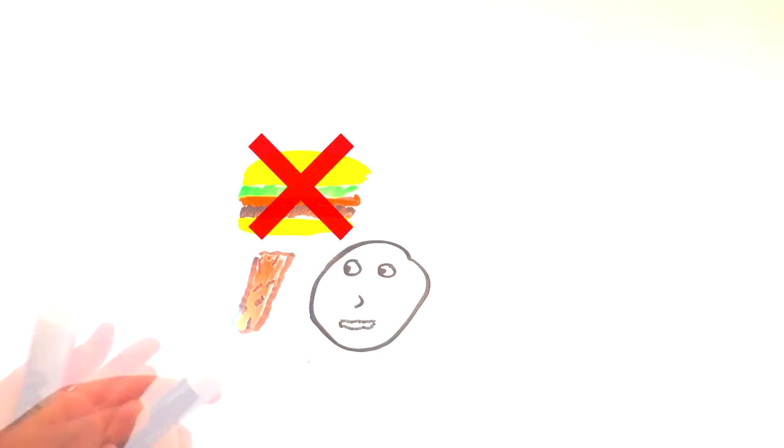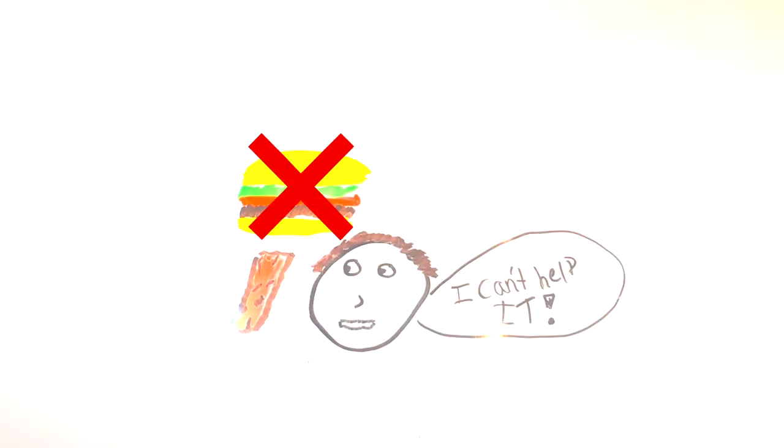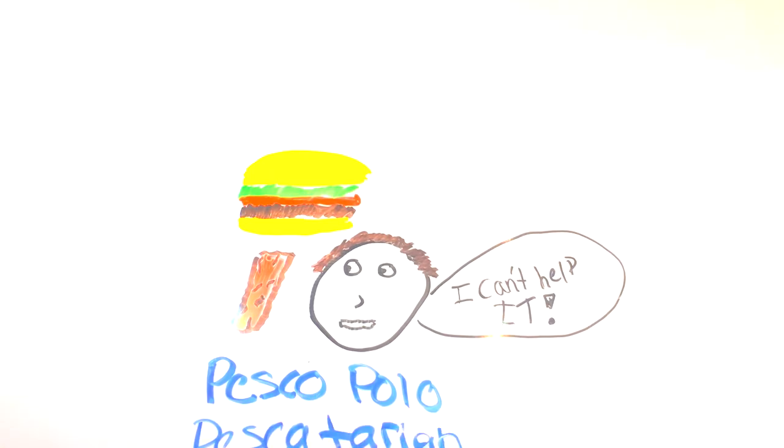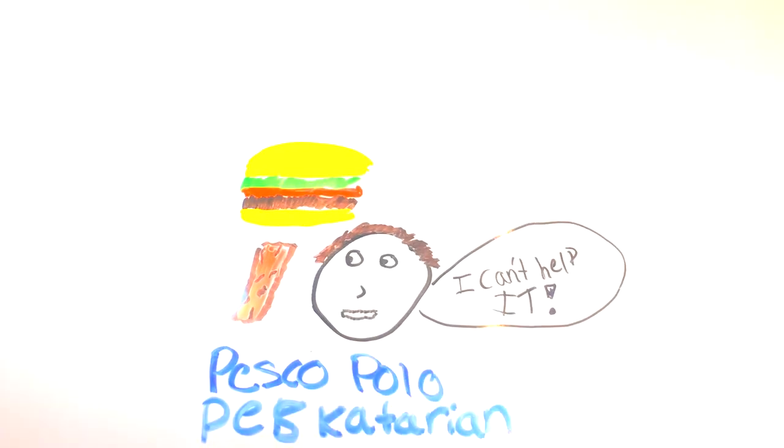First off, what does it mean to be vegetarian? Well, it means that you consume no red meat products like sausage, bacon, and hamburgers. Usually, chicken and fish are avoided, but they can be eaten by pescatarians and pesco-polo vegetarians.